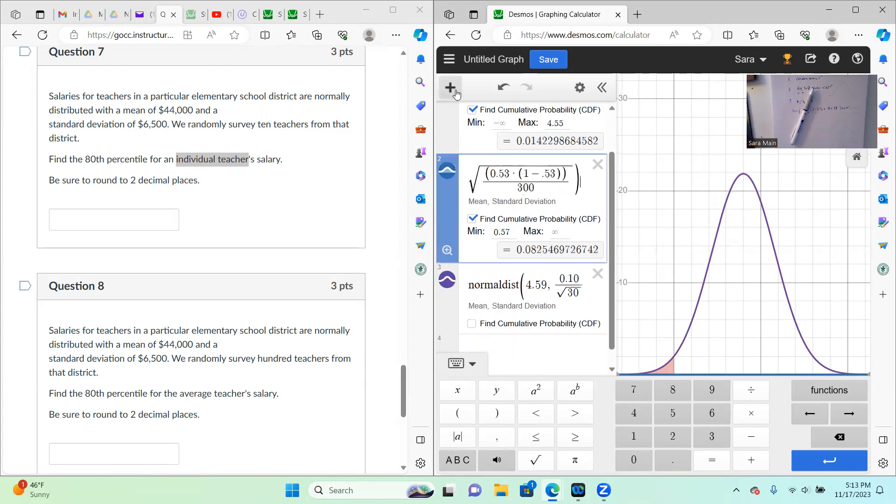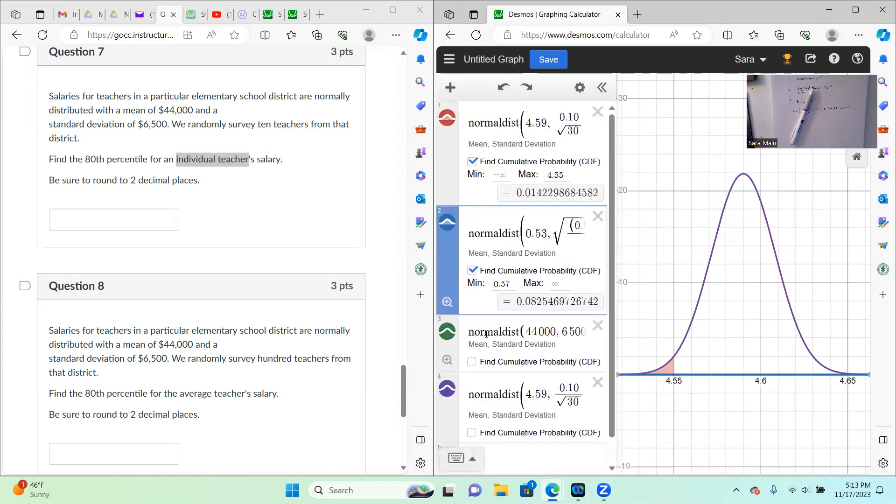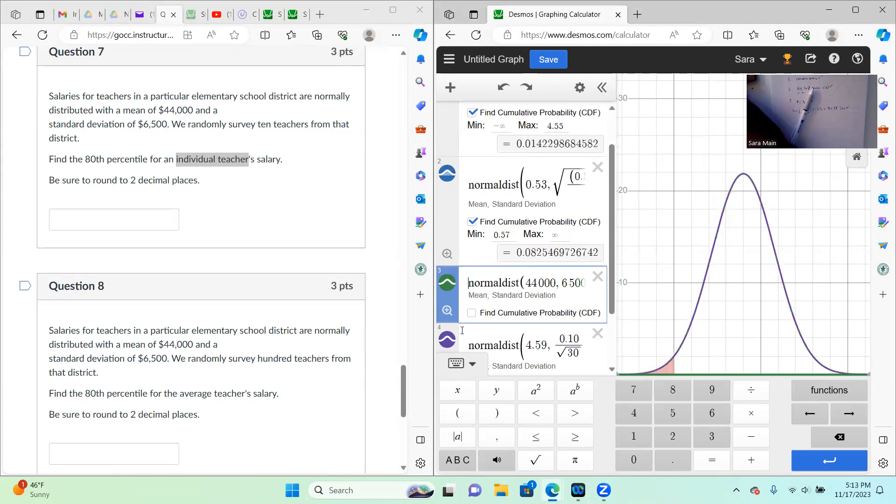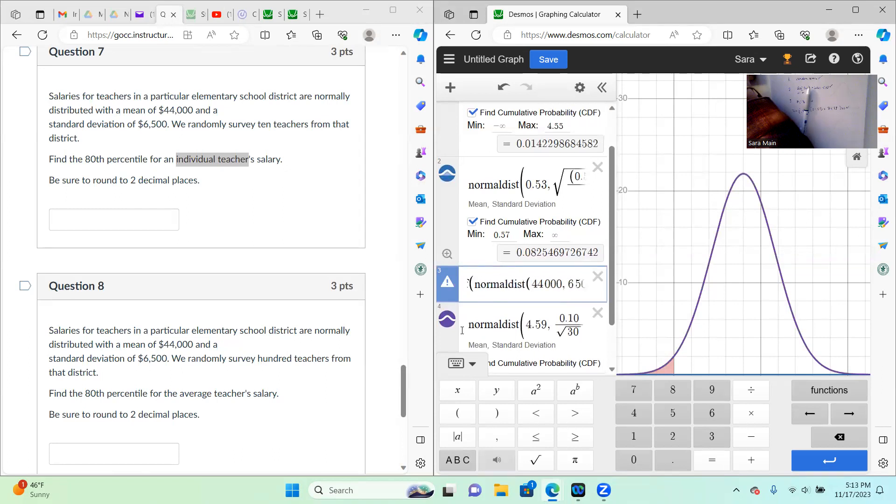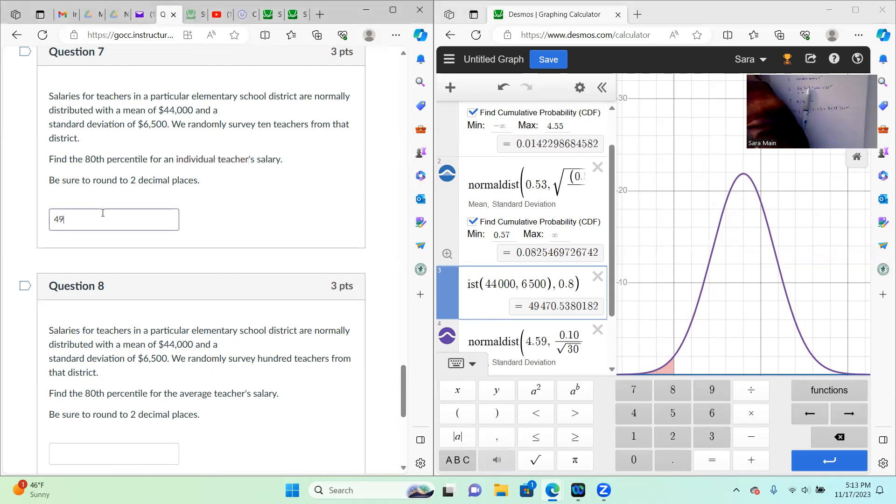And I want to see what the 80th percentile is for an individual. So that's going to be using the inverse CDF of the normal distribution. Remember, I don't have to divide by the square root of n. And it's 0.8 because it's an 80th percentile. So that would be 470.54 cents.